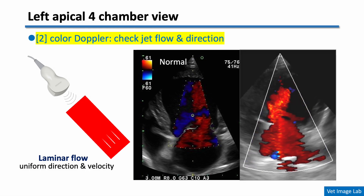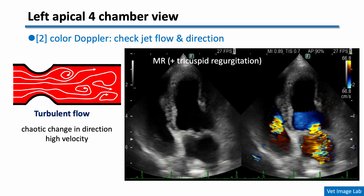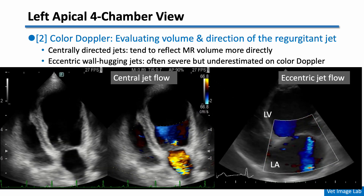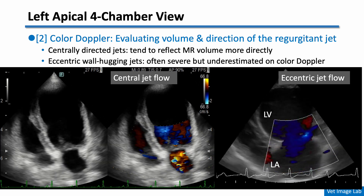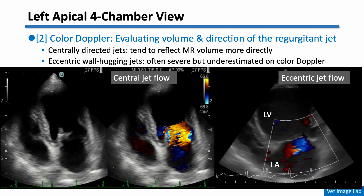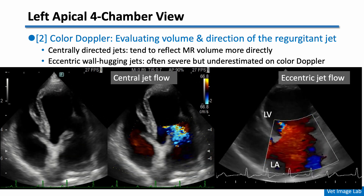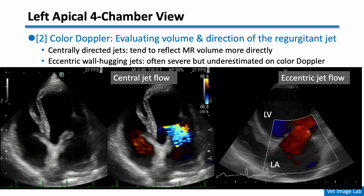Using color Doppler, you must assess the direction and shape of the mitral regurgitation jet. In a normal heart, blood flow from left atrium to ventricle appears red. But in mitral regurgitation, color Doppler clearly shows the systolic jets flowing back into the left atrium as a mosaic pattern. If the jet is centrally directed, it usually correlates well with the regurgitant volume. But if the jet is eccentric and hugs the wall, it can look smaller than it really is, leading to underestimation of severity. Always pay attention to jet direction, and be cautious when interpreting eccentric jets.